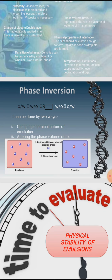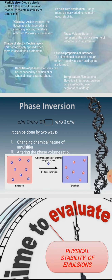At higher temperatures, the external phase water may evaporate, making the product more concentrated. At lower temperatures, the aqueous phase may contain ice crystals, which can rupture the interfacial film and break the emulsion. Therefore, during preparation and storage of emulsion, care should be taken to prevent temperature fluctuation.